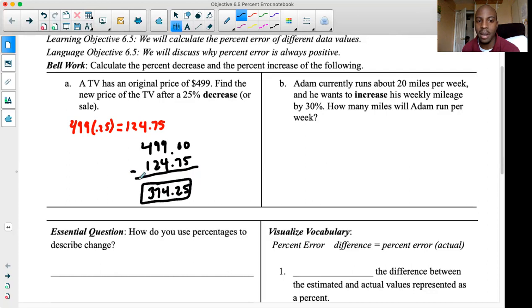Notice I did a decrease here, minus, in comparison to B, where it's talking about increasing. Make sure you add the 30% to the actual original miles. This is how you calculate increase and decrease, which we have done in the past already, but I want to make sure that you refresh yourself on it because we're going to be talking about percent error today. And just to check your answer for B, you should have got 26 miles.